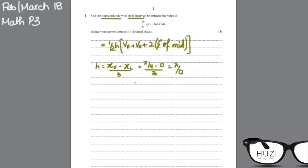Three intervals means we'll have 4 ordinates, so let's make a table for this.